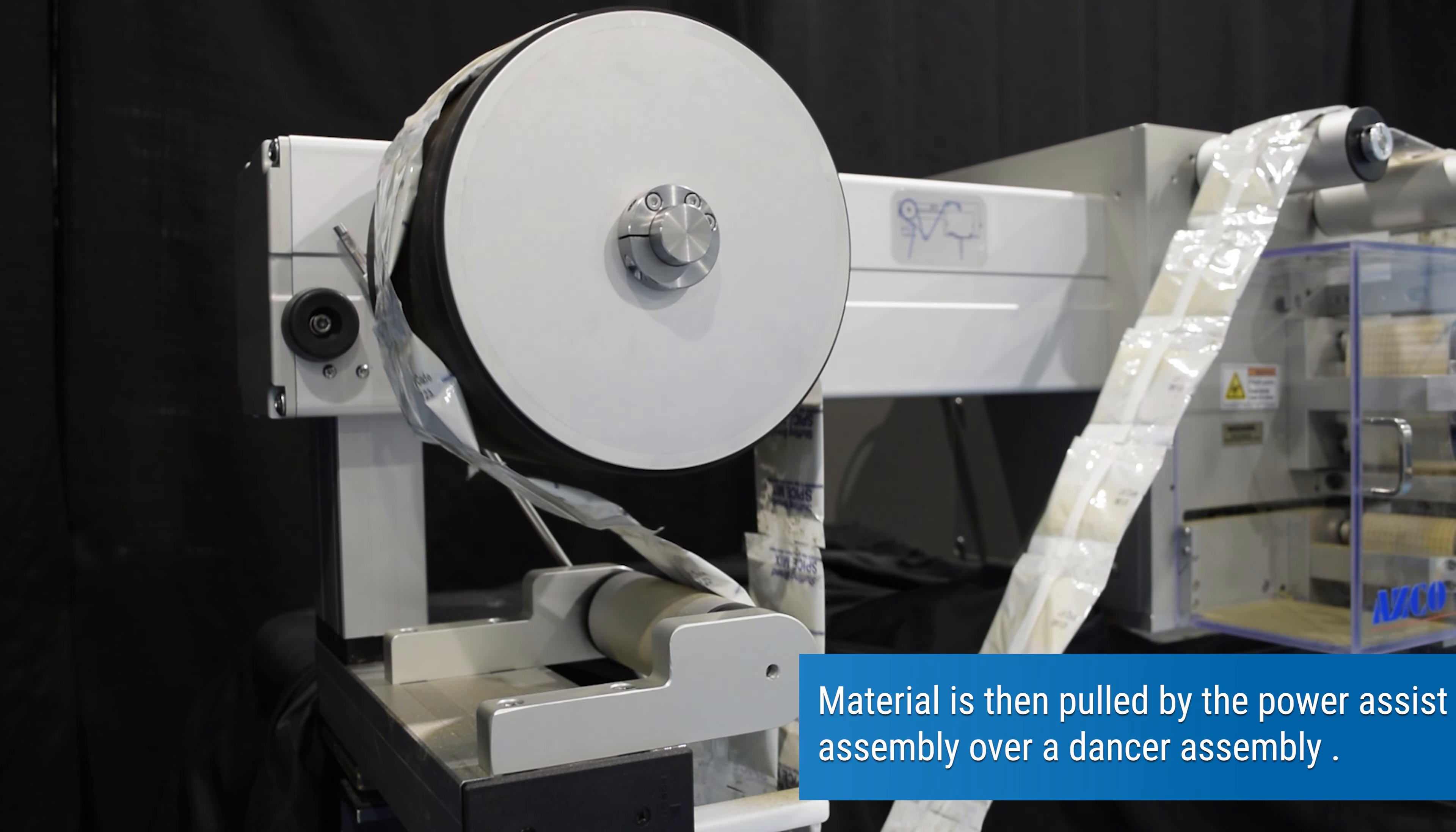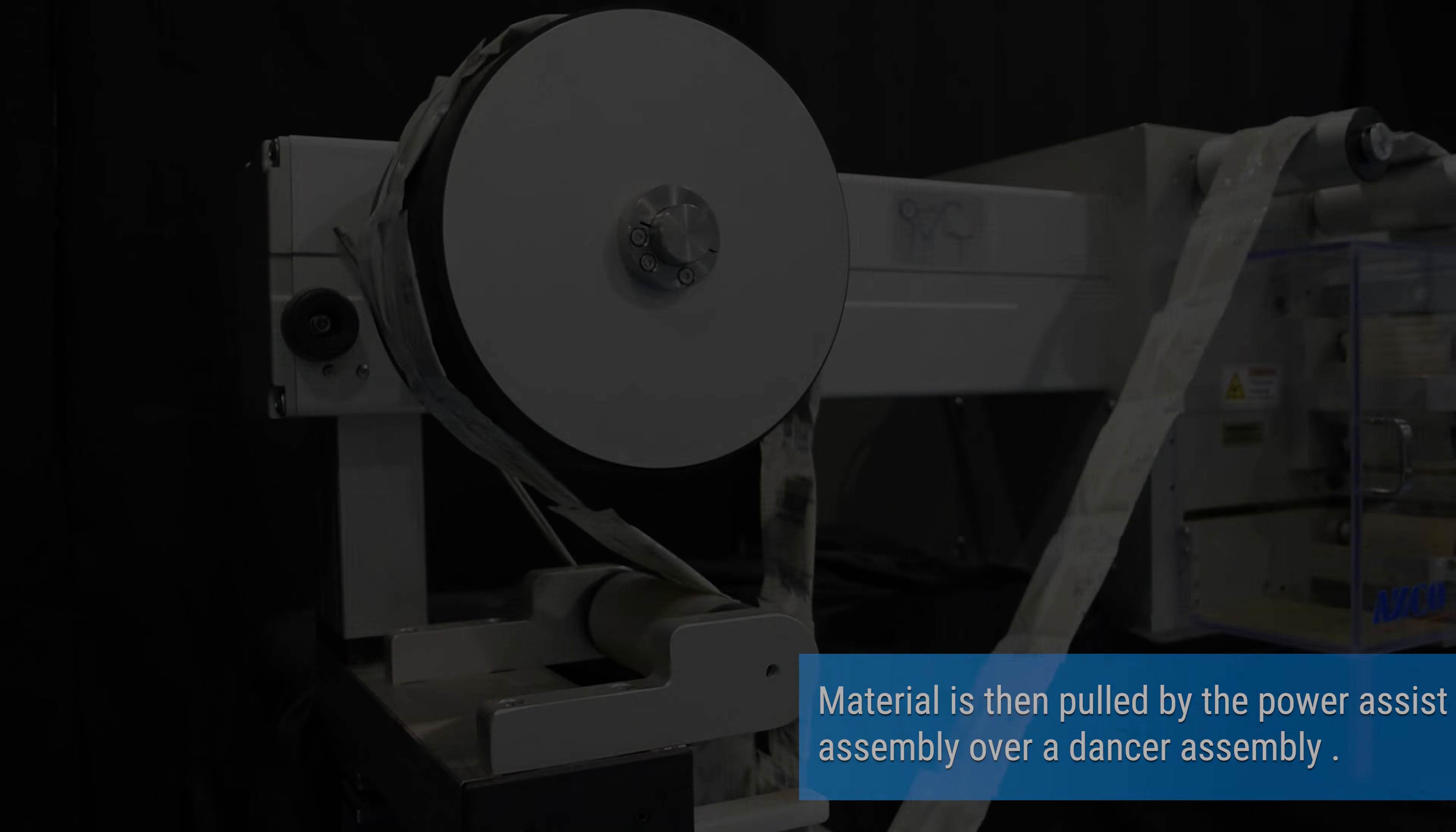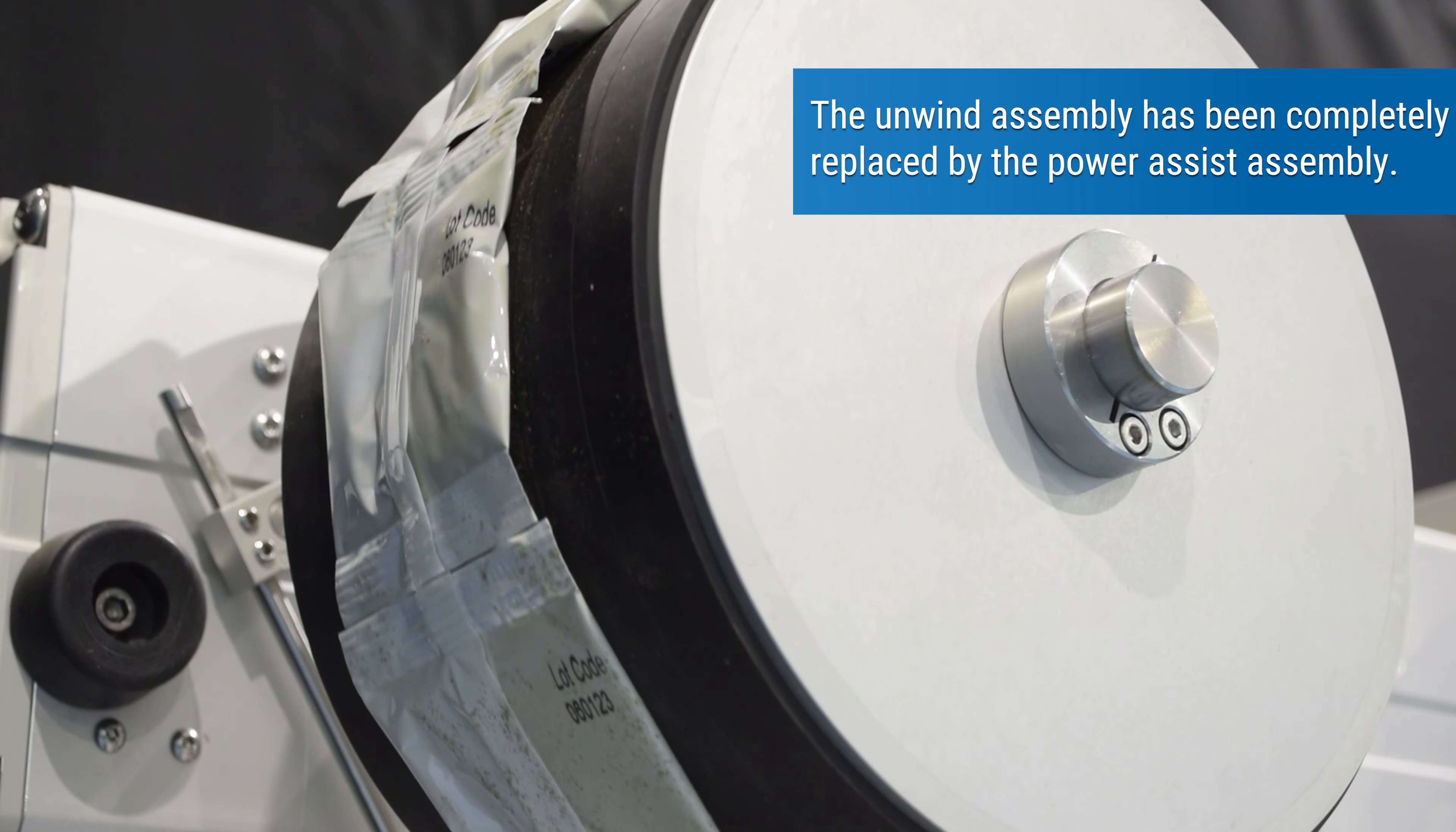Material is then pulled by the power assist assembly over a dancer assembly. The unwind assembly has been completely replaced by the power assist assembly.